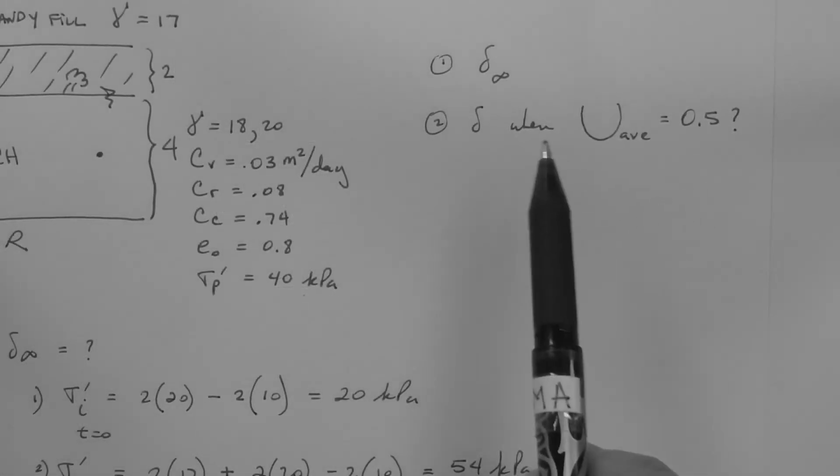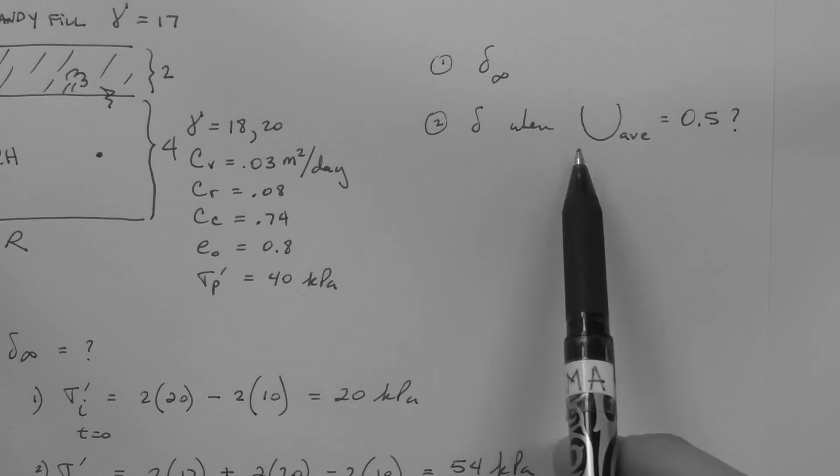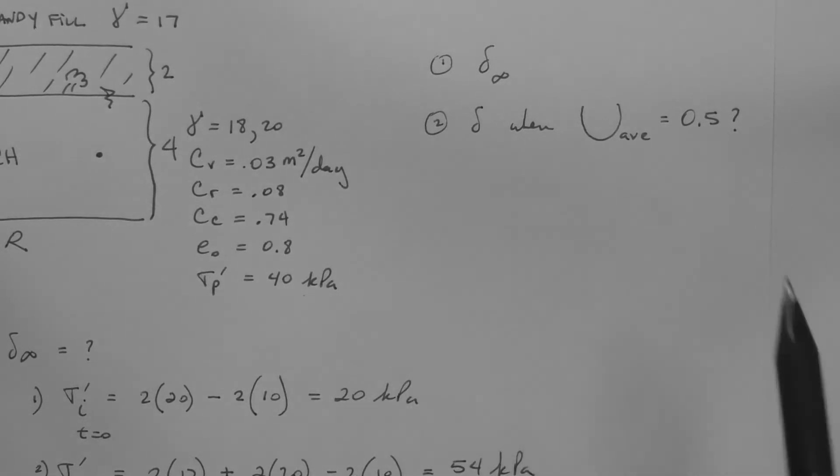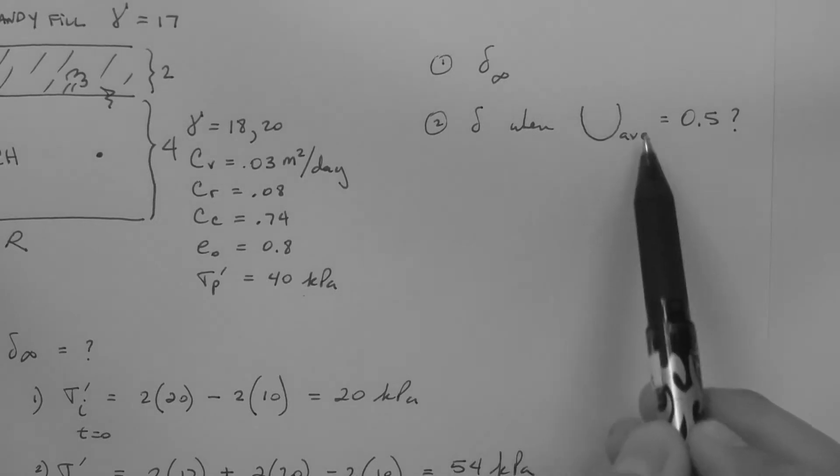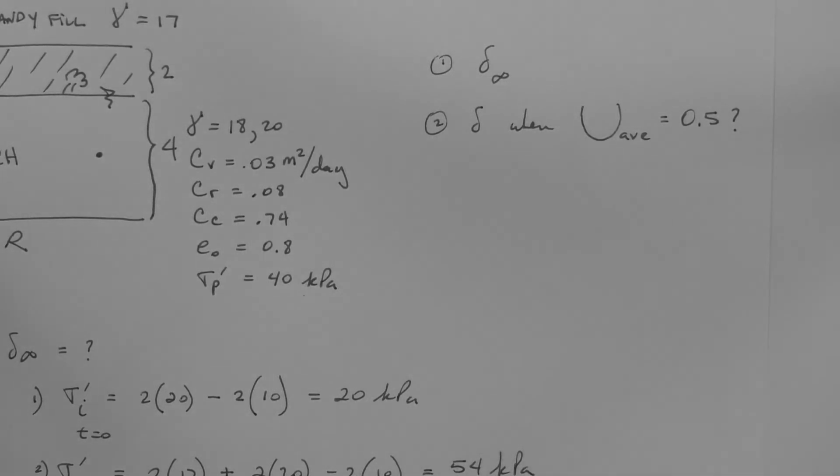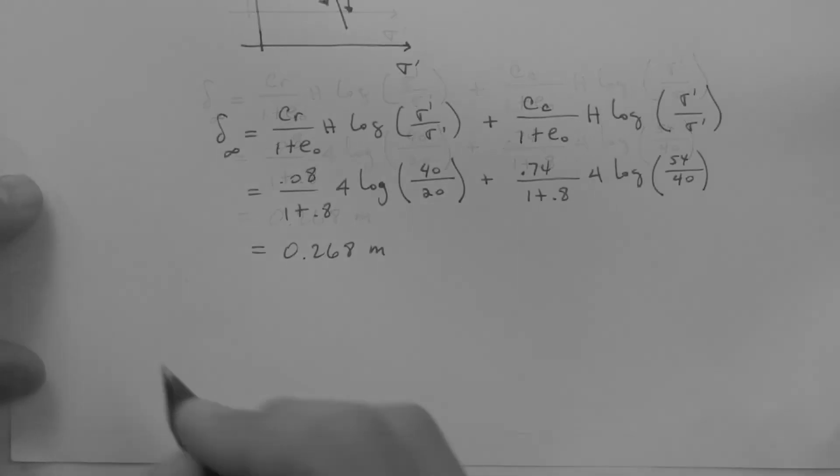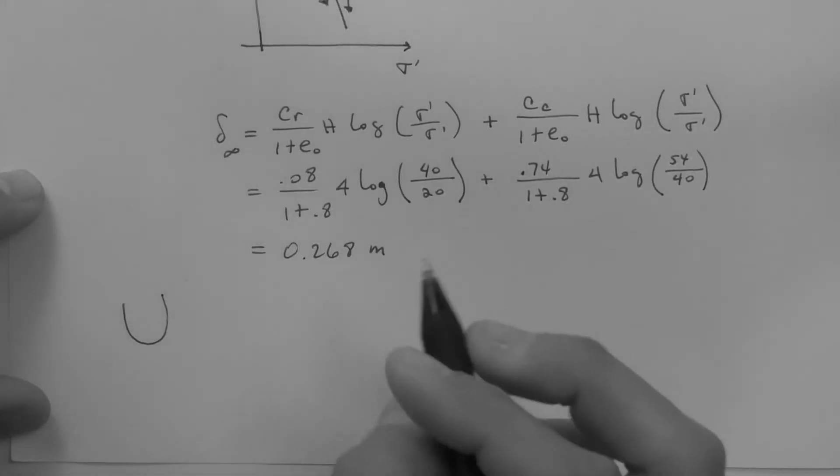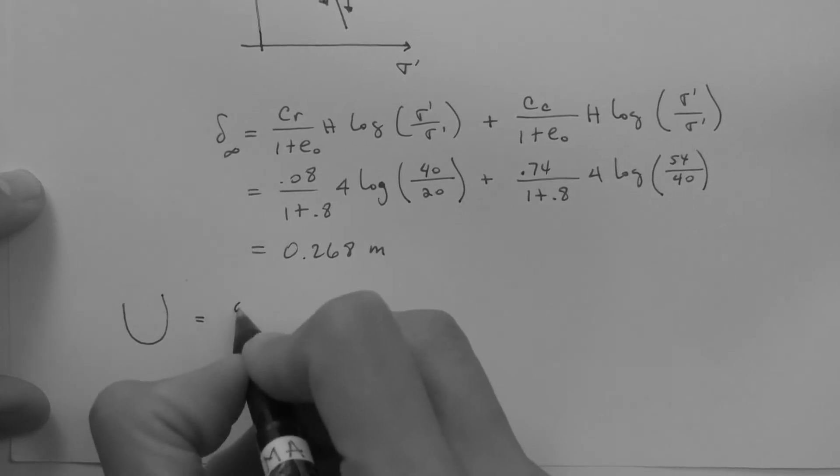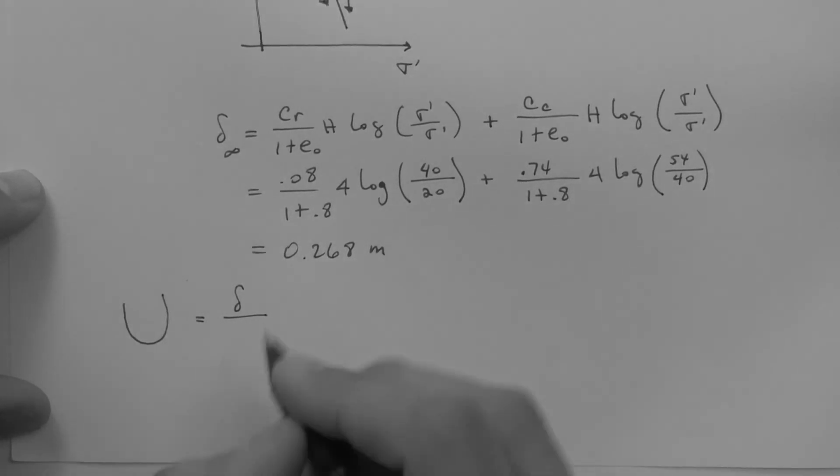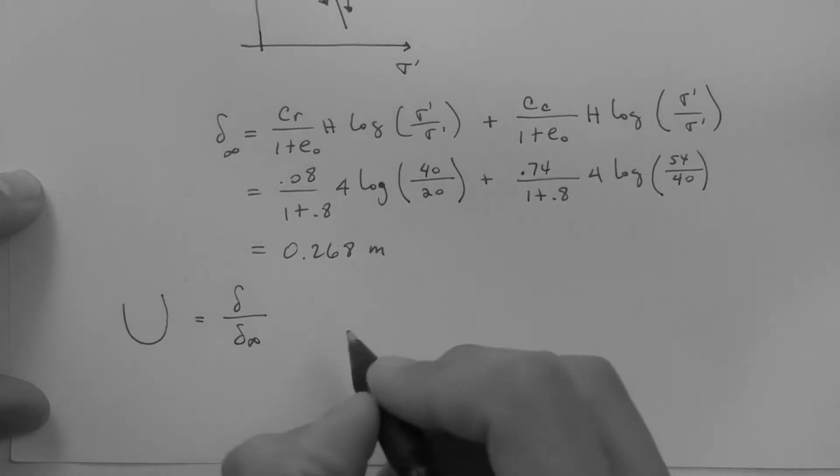The second question is, what is the settlement when the layer has consolidated 50%? A layer consolidated 50% means that the average degree of consolidation is 0.5, or 50%. How do we solve that problem? Well, the definition of the degree of consolidation is the settlement at the time in question divided by the ultimate settlement.